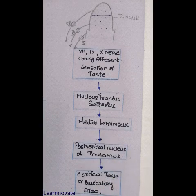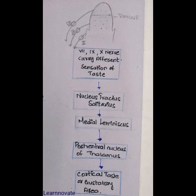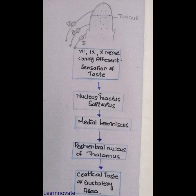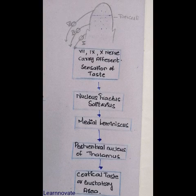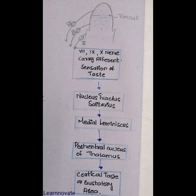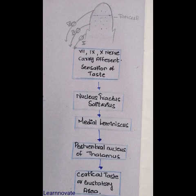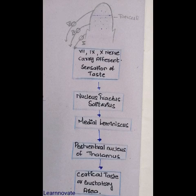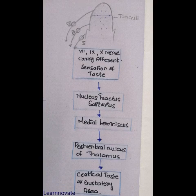One important thing to know while studying this pathway is that taste sensation is very important for the choosing of food — what we should eat and what we should avoid. This is connected with our emotions, behavior, and past experiences of good or bad food, which remain in our memory and help us analyze what we are eating, preventing us from consuming toxic or harmful food.